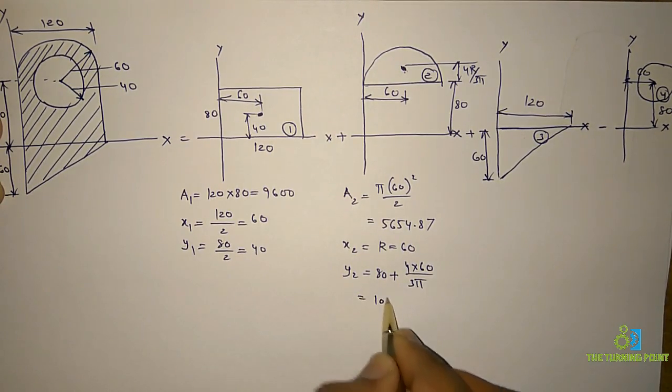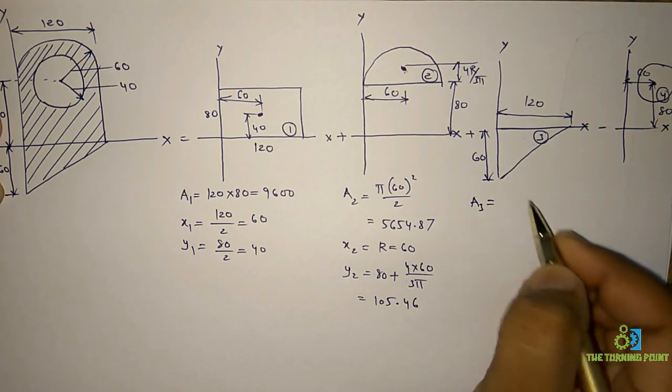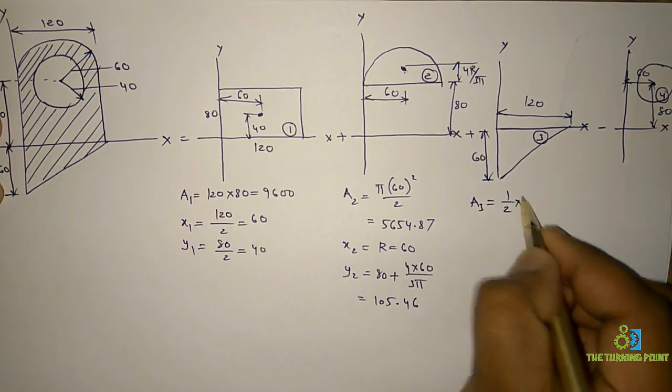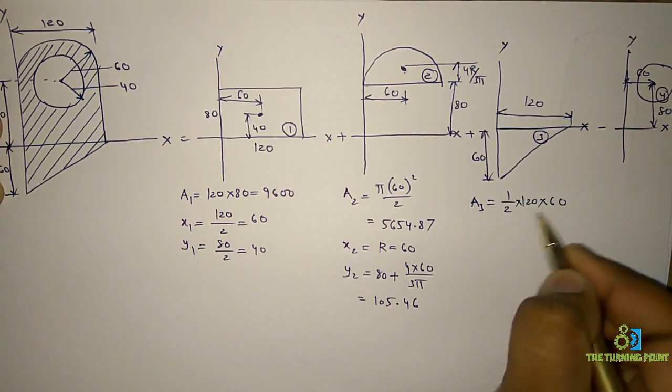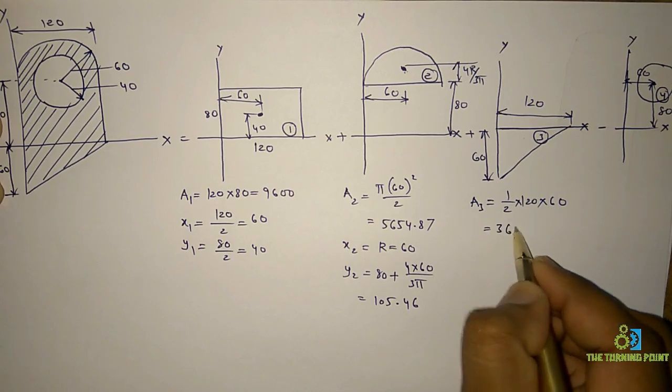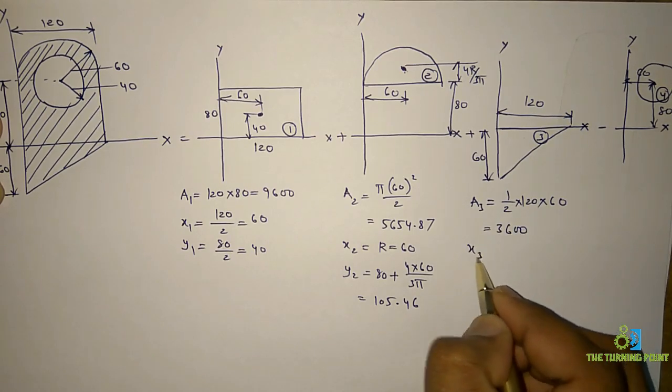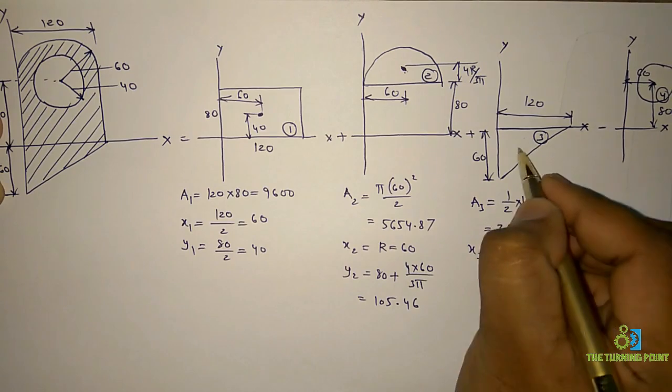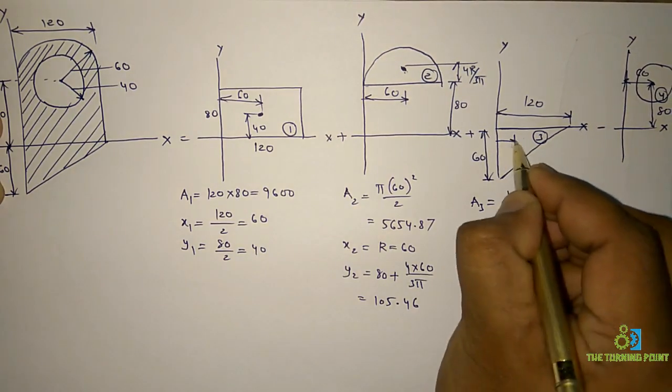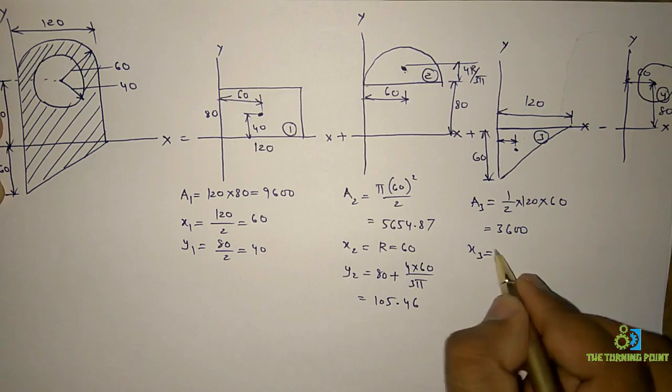For the triangle, area A3 is half times base times height, which equals 3600. x3 is the perpendicular distance to the y-axis, which is base divided by 3, so 120 divided by 3 equals 40.